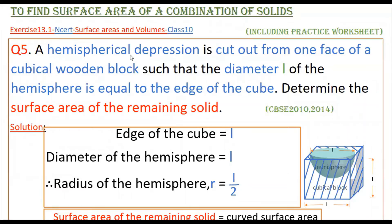This is the fifth problem. A hemispherical depression is cut out from one face of a cubical wooden block such that the diameter L of the hemisphere is equal to the edge of the cube. Determine the surface area of the remaining solid. Here, a hemispherical depression is cut from one face of the cubical block, and we have to find the surface area of the remaining solid — the cube surface plus the inside curved surface of the hemisphere minus the base area of the hemisphere. The given values are: diameter of hemisphere = L, and edge of cube = L.